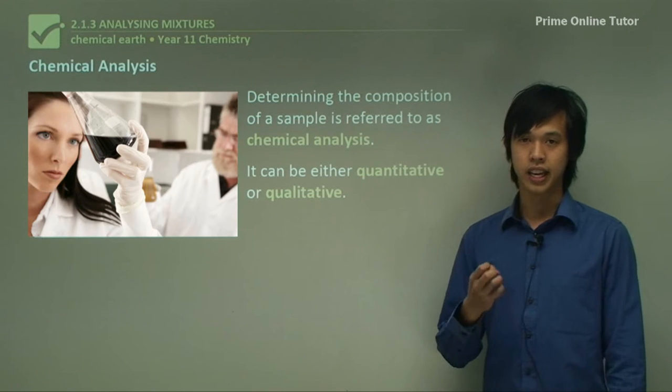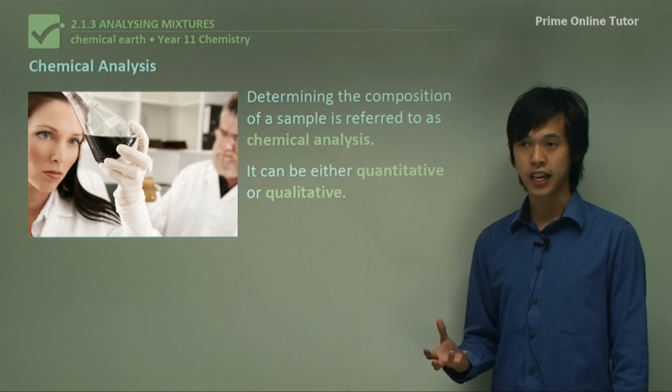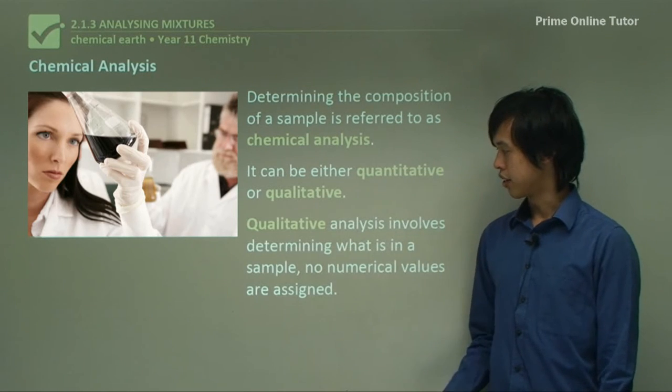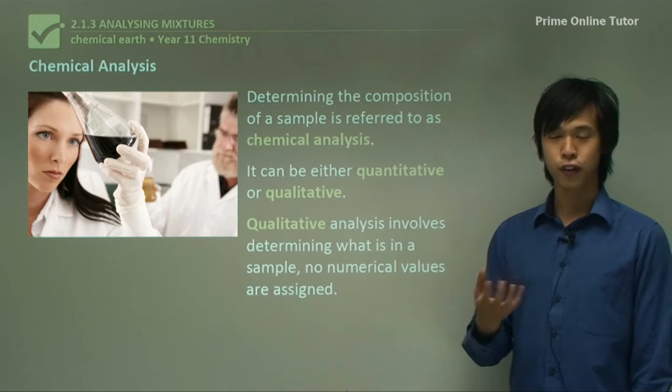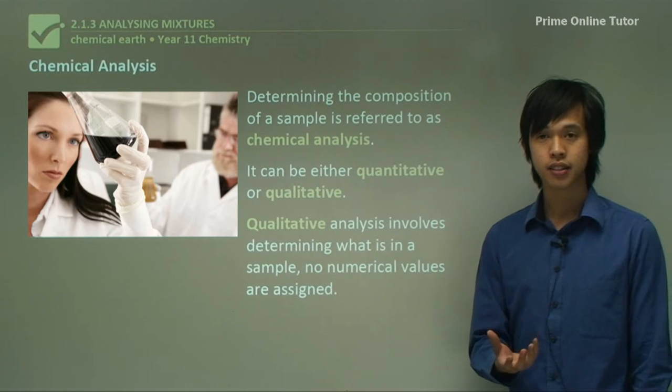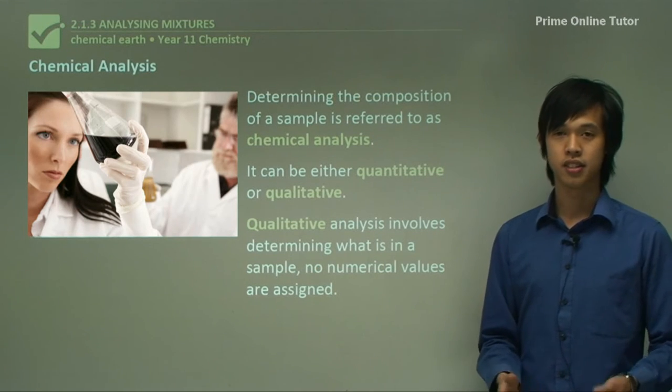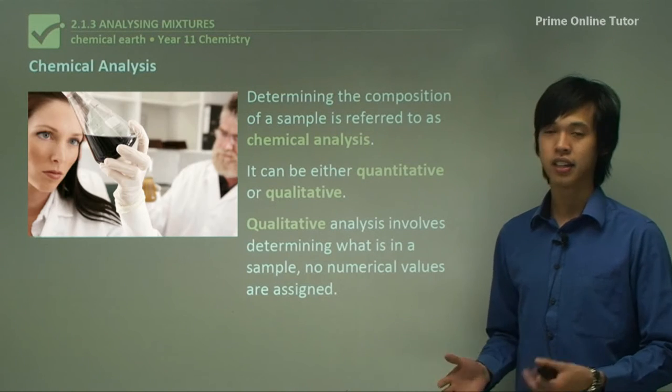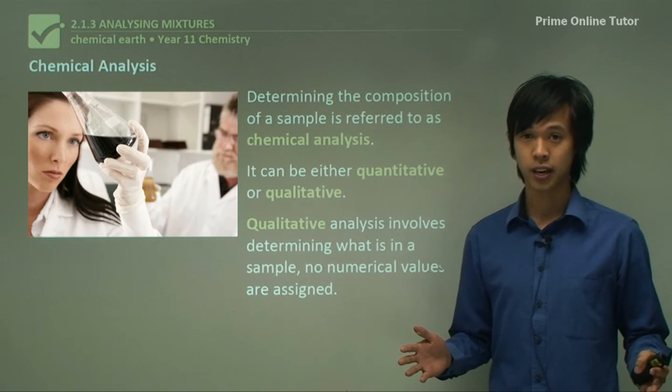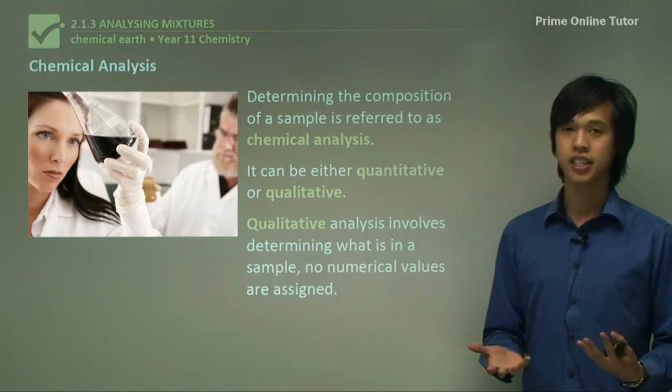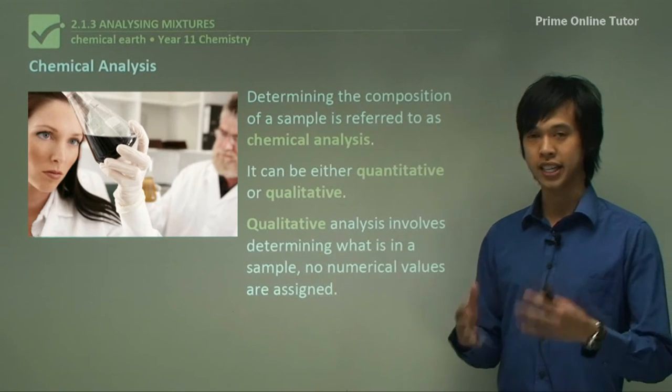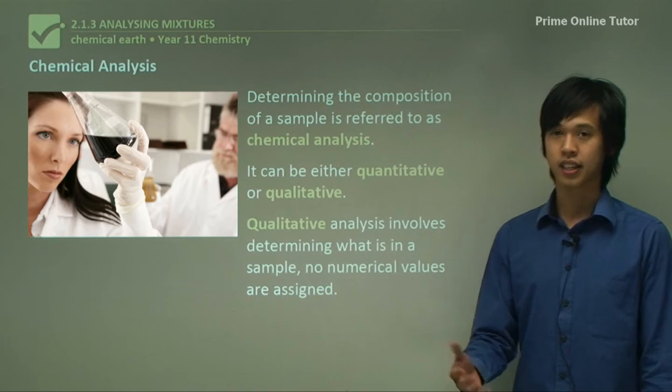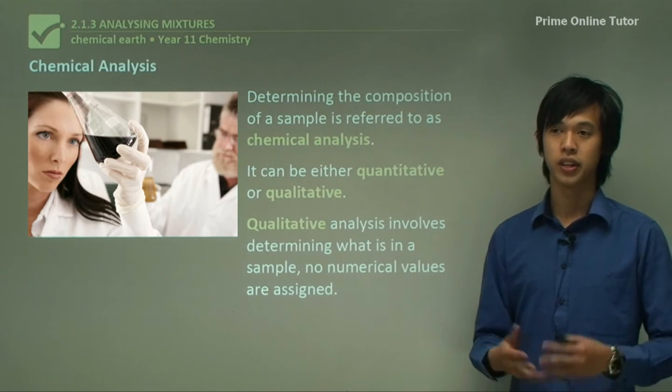Now in chemistry we can either have a quantitative analysis or a qualitative analysis. So qualitative, it's relating to quality, this particular slide is good or this particular slide is bad. They're not numerical. So qualities are something that you can't place a value on. And so qualitative analysis, you don't assign values to what you get out.